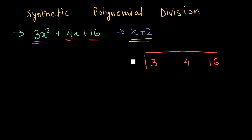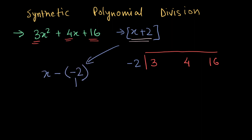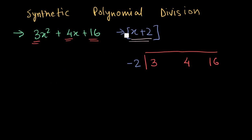For this example, the new divisor will be minus 2, because our old divisor x plus 2 can be written as x minus (minus 2), and that value is r. If it were x minus 2 instead, our new divisor would simply be 2, since it's already in the form x minus r.